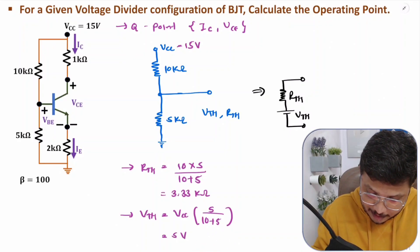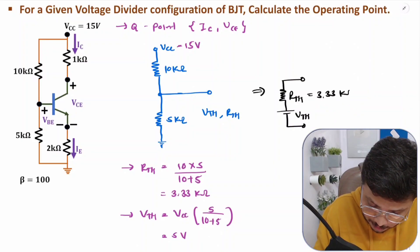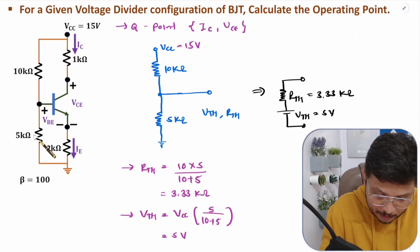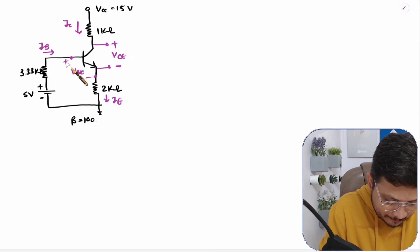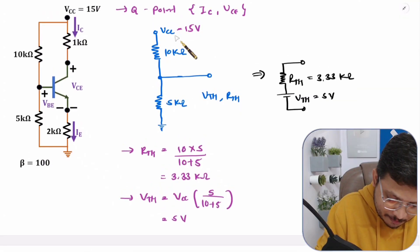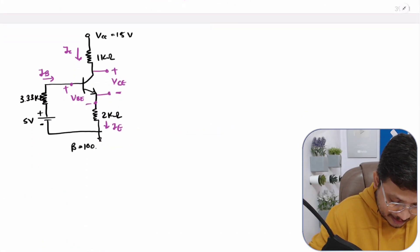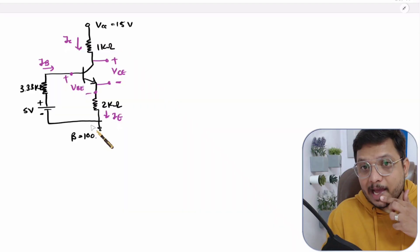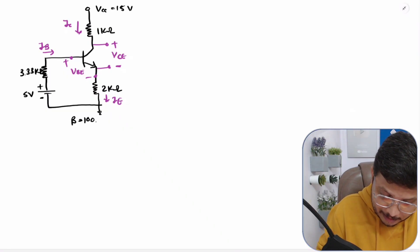So RTH = 3.33 kΩ and VTH = 5 volts. I will replace R1 and R2 with this Thevenin equivalent and redraw the circuit. The equivalent circuit has RTH = 3.33 kΩ and VTH = 5V connected in, with the remaining circuit unchanged. Now in this equivalent circuit we need to find the operating point — IC and VCE. Let us apply KVL at the input side.